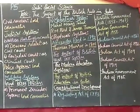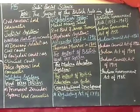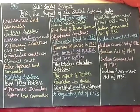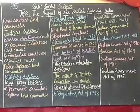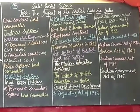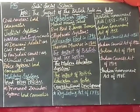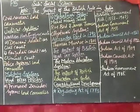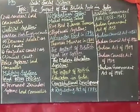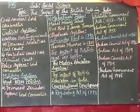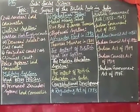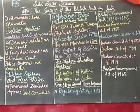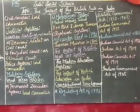The Indian Council Act of 1892 was a continuation of the 1861 Act. The number of additional members was increased, and Indians became a larger part of the cabinet and the council of members — from a small number to a larger number.